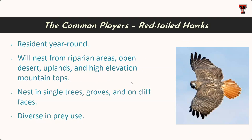Red-tailed Hawks are a year-round resident. They will nest pretty much anywhere they can find a suitable nest site — that includes riparian areas, single trees in the open desert uplands, and all the way up to the mountaintops in the Trans-Pecos. They'll nest in trees and on cliffs as well, and will eat pretty much anything they can catch of a suitable size — a lot of snakes, small rodents, and occasionally birds.